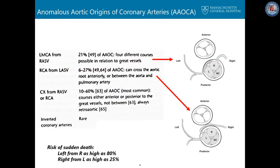As surgeons, we are principally interested in anomalous origin of the left coronary artery from the right coronary sinus and the right coronary artery from the left sinus. Left main coronary artery from the right sinus makes up about 21 percent of anomalous aortic origins, and there are four different courses possible with relation to the great vessels, shown here.